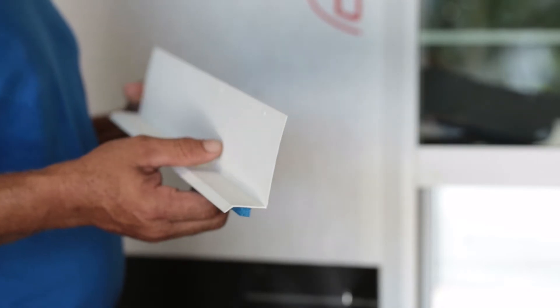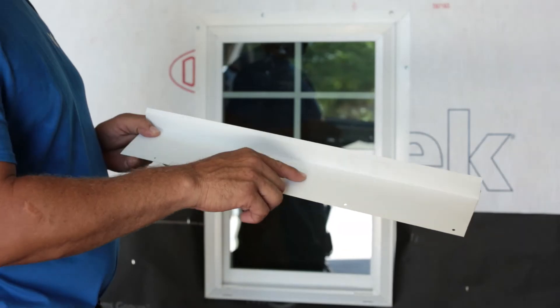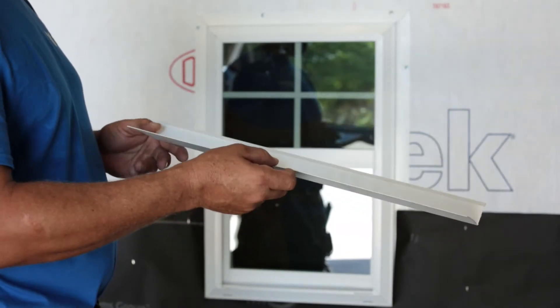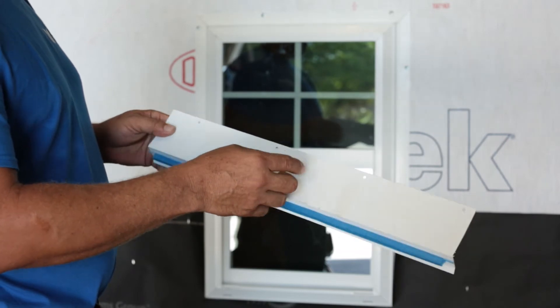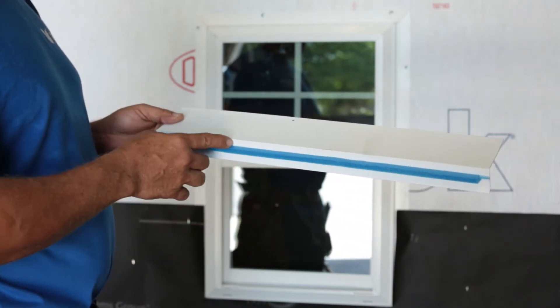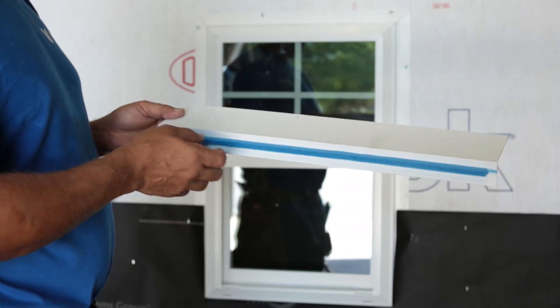Our backer bead family of products includes a drip flashing made with a code approved three and a half inch attachment flange. The closed cell backer rod is factory applied consistently with the proper depth to provide a consistent gap around your opening.